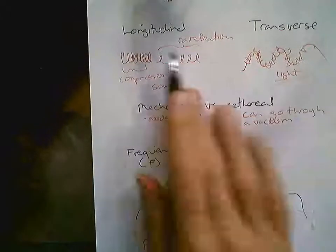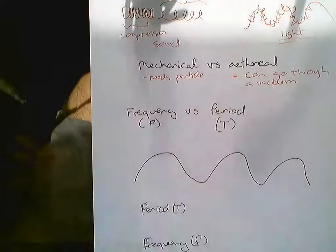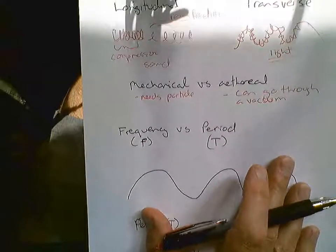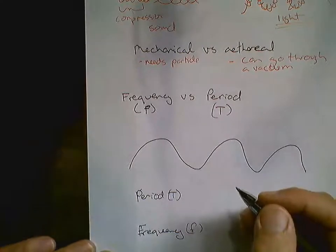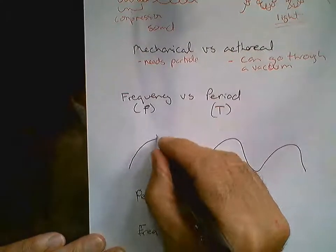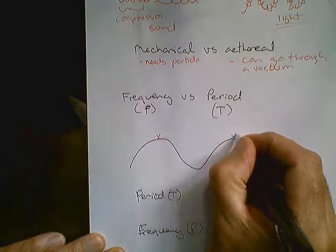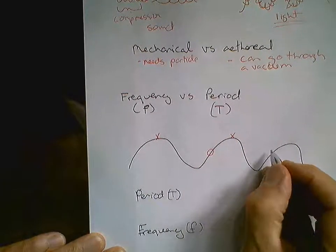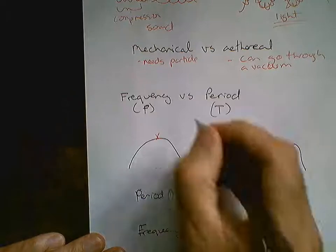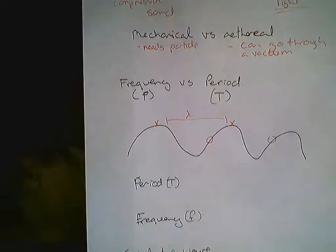So so far we've got a few terms: what a longitudinal wave is versus a transverse wave, and mechanical versus ethereal. Now here's the transverse wave, and we're going to look at frequency versus period. The first thing we need to do is figure out what a wavelength is. A wavelength is when you pick a spot on a wave and travel until you get back to that same spot again. The distance from one point to that same point on the next wave is called wavelength, and the symbol is lambda.